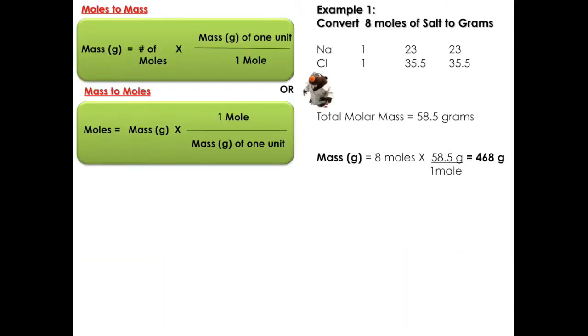Let's do a couple of examples to understand this. Suppose that we want to convert 8 moles of salt to grams. Salt, you remember, is sodium chloride. Sodium appears with one atom and chlorine with one too.